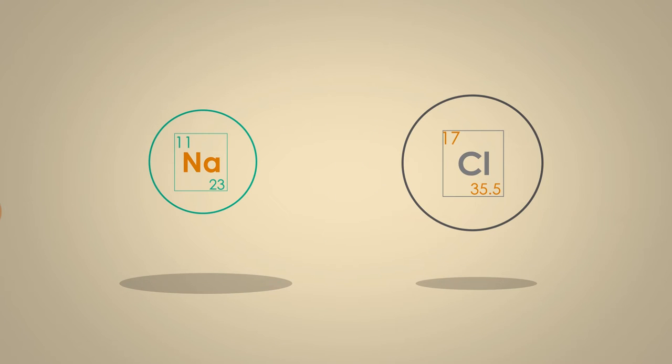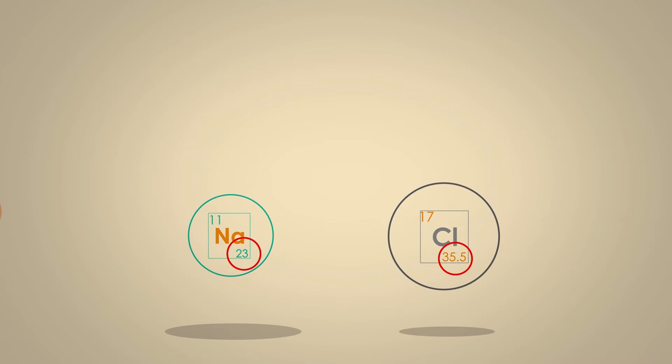The molecular mass of a compound is found by adding up the atomic masses of all the elements that make it, multiplied by the number of times each atom appears. For sodium chloride, NaCl,